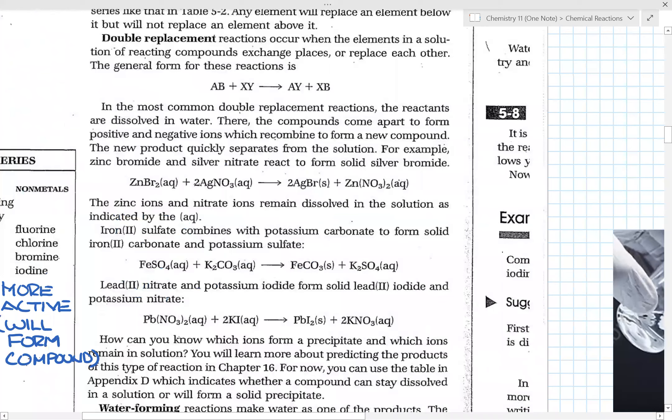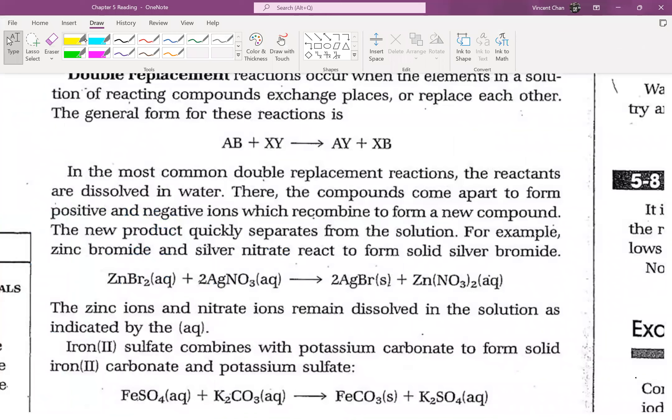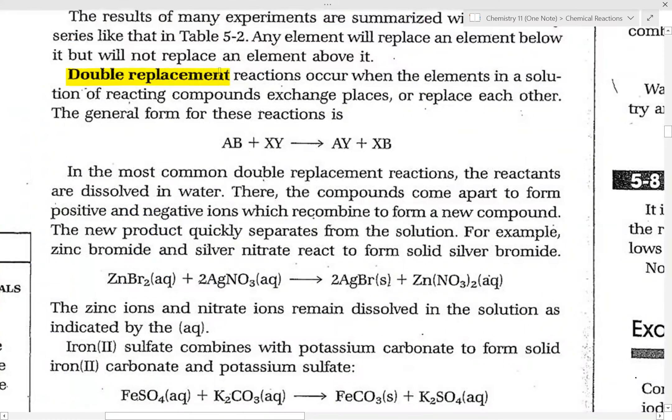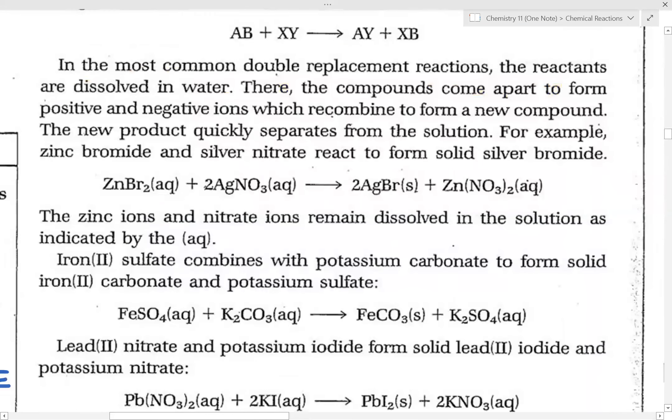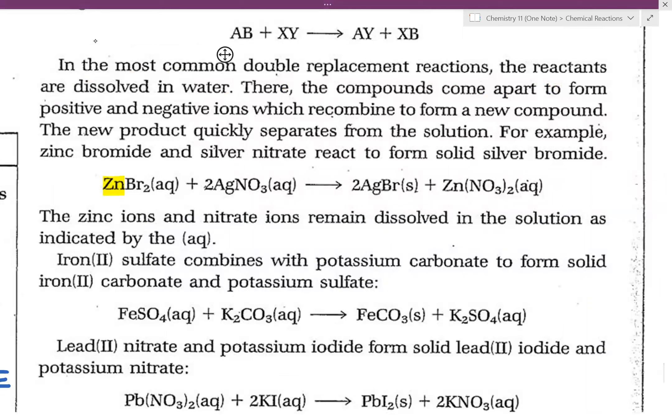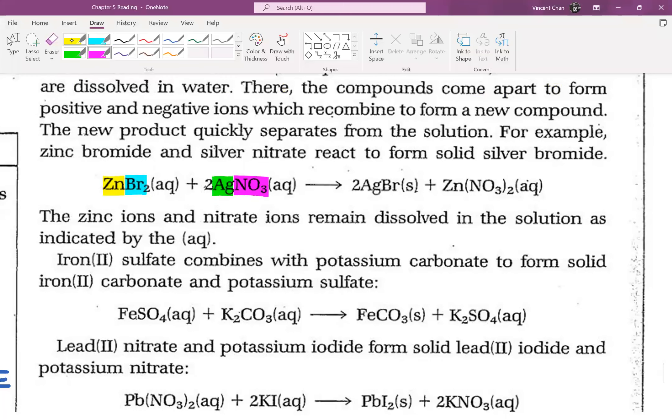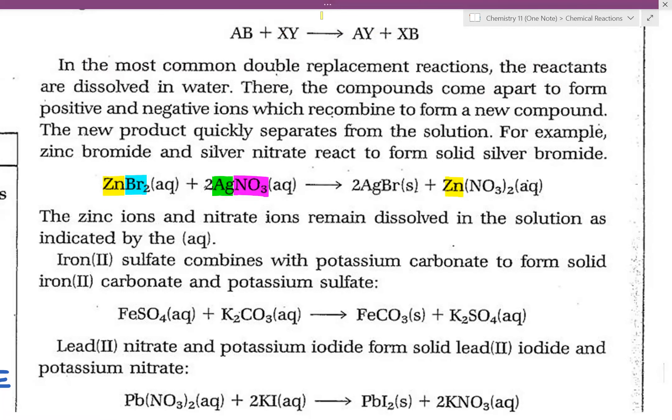Now, the next one that I would like you to be aware of is double replacement. Now, again, back in grade 10, the double replacement is basically where it says you switch partners. So elements in the solution exchange places or replace each other. Now, most of you are pretty comfortable with that from grade 10. So in this case, let's say we have zinc and bromine. So we have zinc, I will highlight in yellow. Bromide will be in blue. And what happens is you have silver and you have nitrate. Now, again, what happens is they switch partners. So you have zinc that goes with the nitrate, while you have silver with bromine.